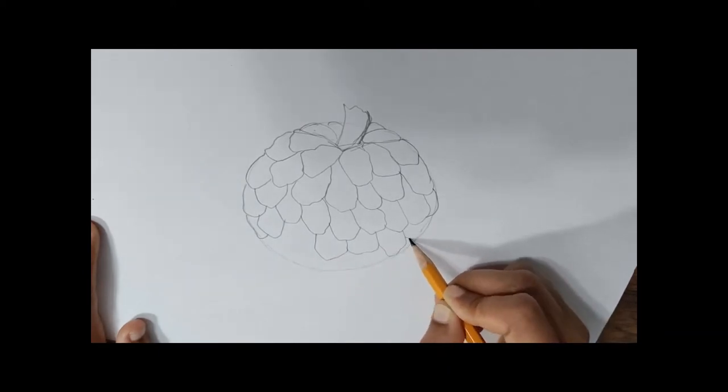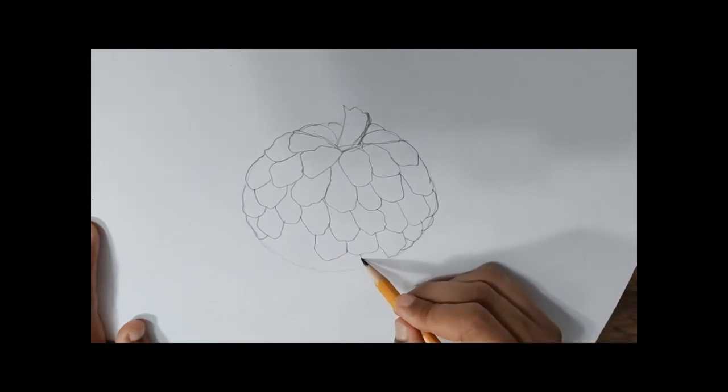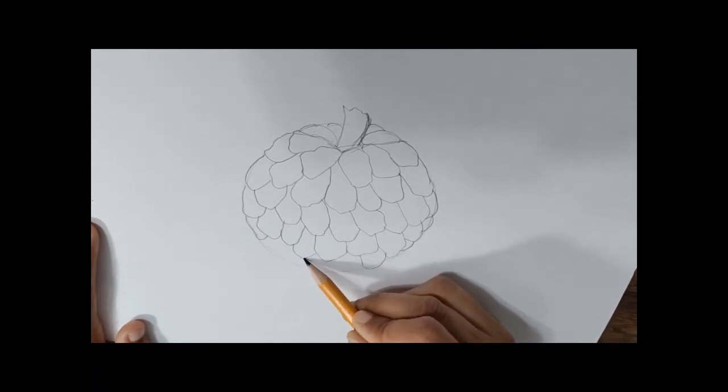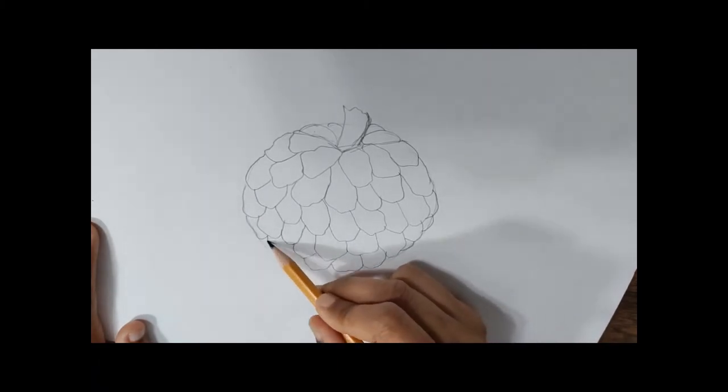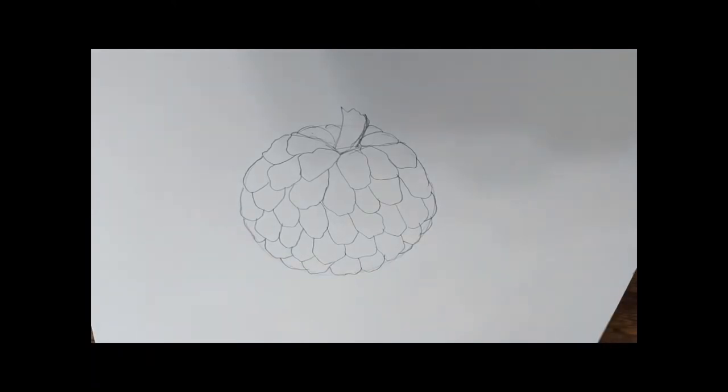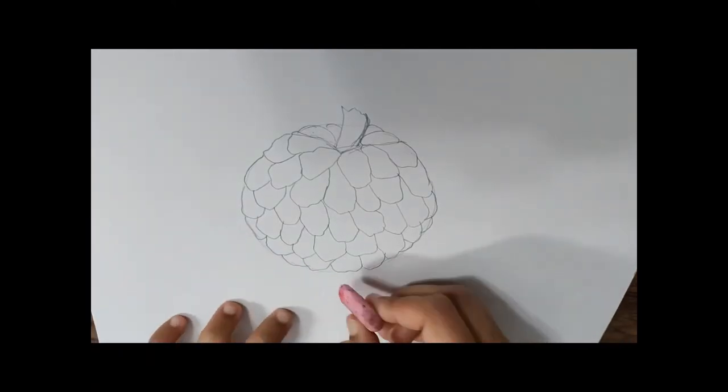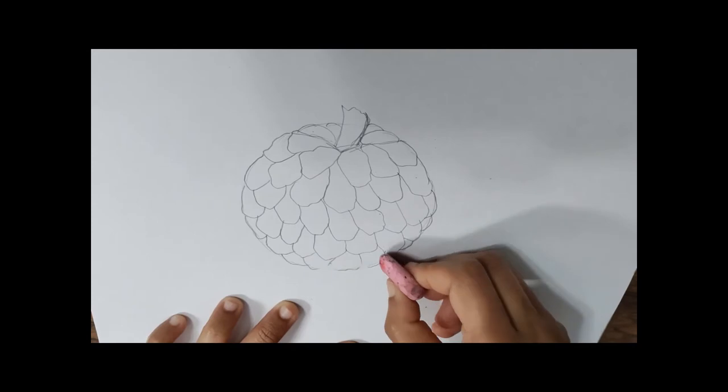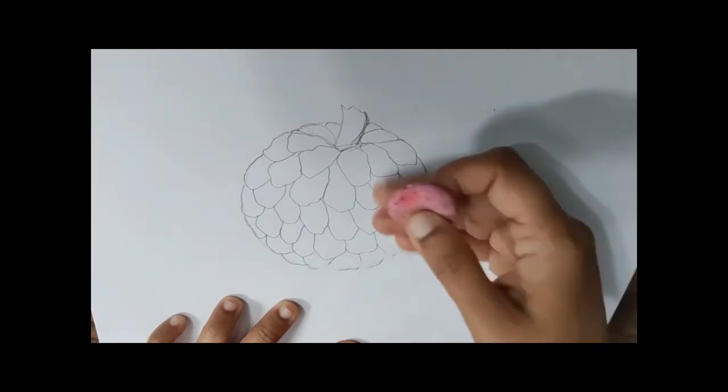Once you are done with the scales, I am going to just erase the leftover circle shape. The next step is the coloring part. I am going to use green color, yellow color, black color.